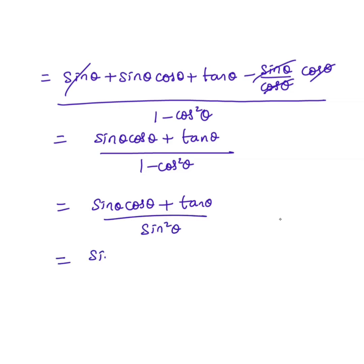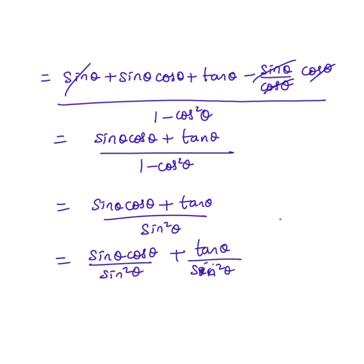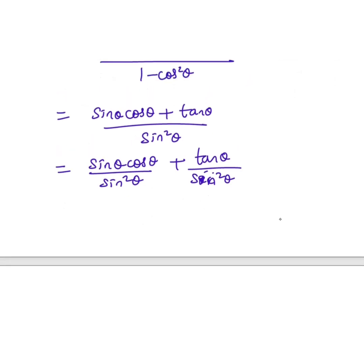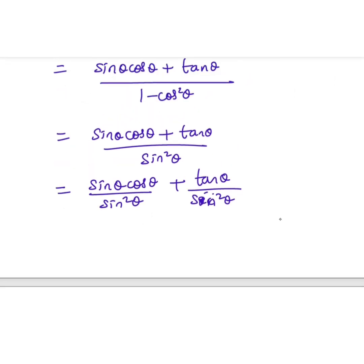Separating the numerator, we get (sin θ cos θ divided by sin squared θ) plus (tan θ divided by sin squared θ). The sin terms cancel in the first fraction giving cos θ / sin θ, which simplifies. Then tan θ is written as (sin θ / cos θ) into (1 / sin squared θ), and sin cancels.